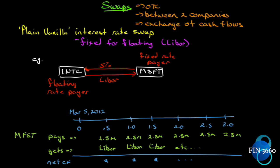We are beginning chapter seven, which is about swaps. The name is quite appropriate because as we go through the chapter you'll see that's exactly what's going on — there's a swap of something. These are OTC contracts, over-the-counter; they are not exchange-traded. They are contracts between two companies for the exchange of cash flows — not for the delivery of any final amount of cash or any underlying asset, but for the exchange of cash flows, so both sides are delivering.